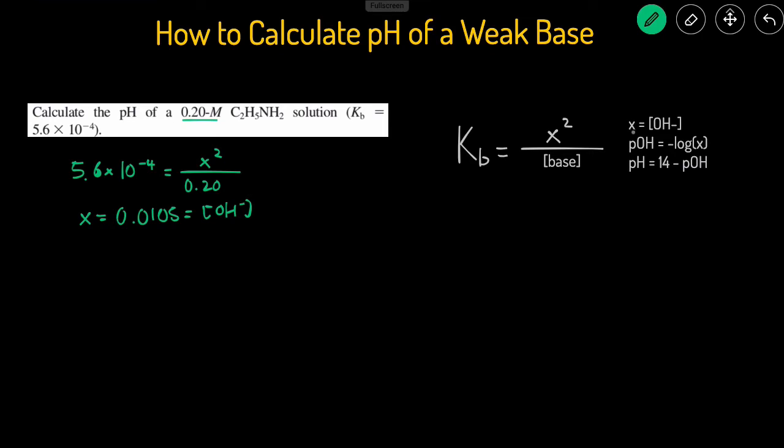I'm going to go back to full screen. You can see that x equals OH. Now we're going to solve for the pOH by taking the negative log of that. So we're going to take the negative log of the concentration of the OH, which is the 0.0105.